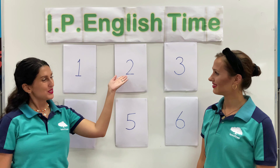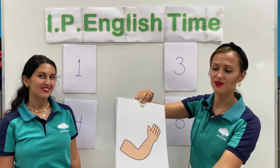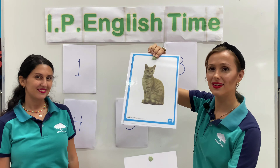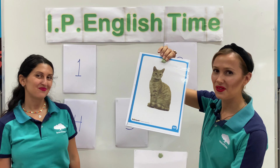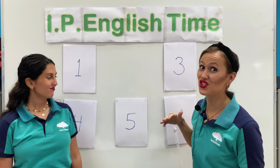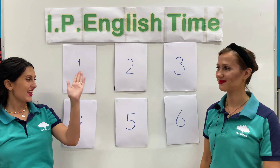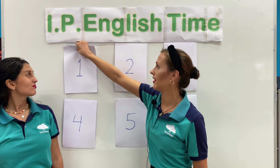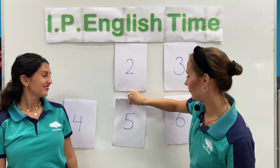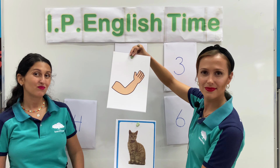Okay, number two. Let's have a look — what is it? Arm. And number six, what is it? Cat. Is this a match? Okay, let's try again. Teacher Val, can you give me two numbers please? Number one and number five. Number one, what is it? Cat. And number five, what is it? Arm. Is this a match? No.